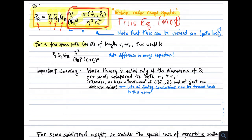For a free space path with no Q but having the same total length R sub I plus R sub S, the free space Friis equation would be P sub T times G sub T times G sub R times lambda squared over 4 pi squared — note this is squared, not cubed — times the range dependence as simply that sum of distances squared. This is what we get from the free space Friis equation for the same overall path length but without scattering.